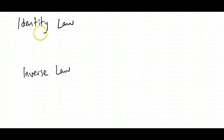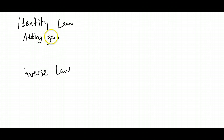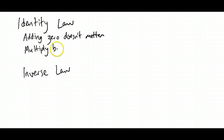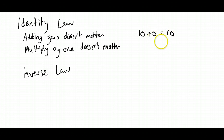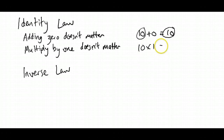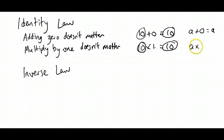The other two laws we need to know about are the identity law and the inverse law. The identity law is very simple: adding 0 doesn't change anything, and multiplying by 1 also doesn't change anything. So 10 plus 0 still equals 10, and 10 times 1 still equals 10. In algebraic terms, a plus 0 still equals a, and a times 1 still equals a. It won't change its identity — that's why it's called the identity law.